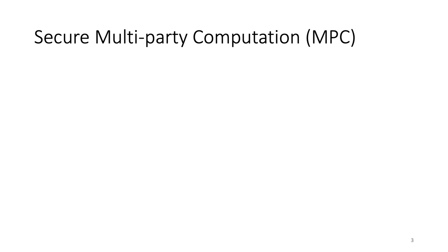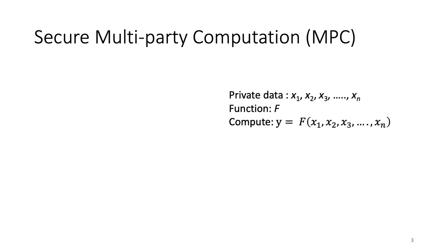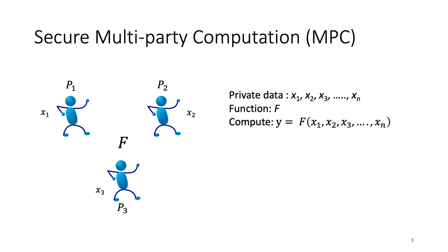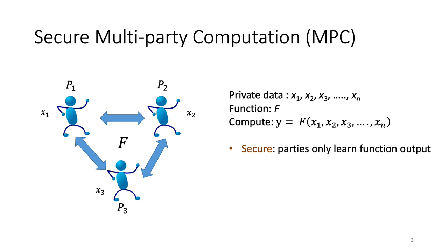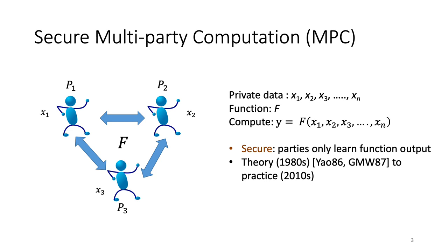What is MPC? In MPC, there are a bunch of parties with private inputs who are interested in computing a function f on their private data. For example, consider three parties p1, p2, and p3 with private inputs x1, x2, and x3, who want to compute f on their data. With MPC, the parties run an interactive protocol amongst themselves at the end of which they learn the function output and nothing more about the other party's data. The theory of MPC was developed in the 1980s with protocols like Yao's Garbled Circuits and GMW, but it is only recently that some of these protocols have become efficient enough for practical use.